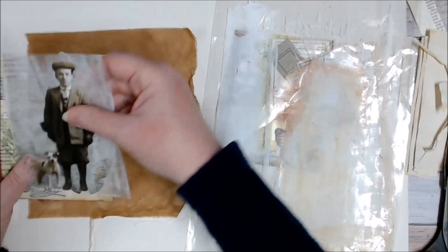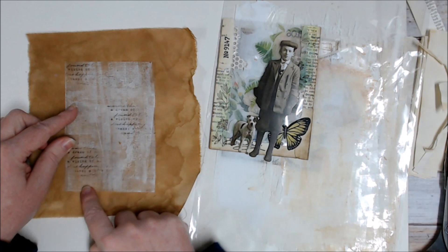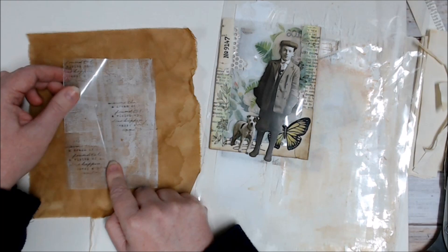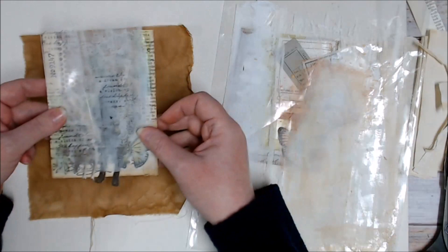To do that I've taken another cellophane bag or piece of cellophane from a bag and I just brayed a little bit of gesso lightly onto this piece of cellophane. And then I've stamped on here with some archival ink, let that dry.